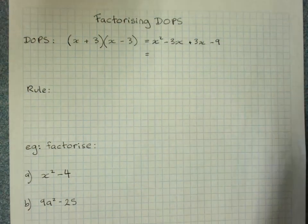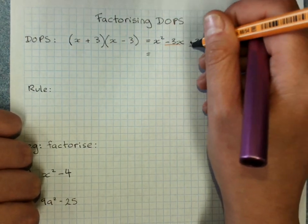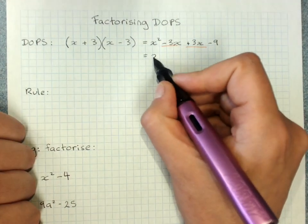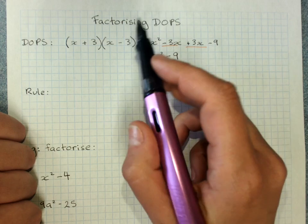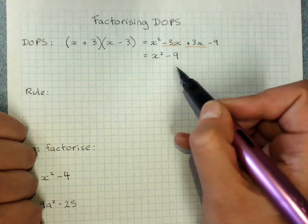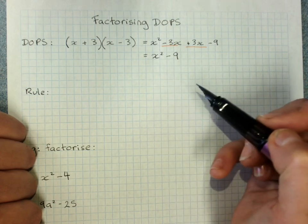You'll see that when we gather our like terms, negative 3x plus 3x will just cancel out. And so I'll be left with x squared minus 9. Minus is of course a difference. And x squared and 9, 3 squared, are perfect squares. So this is a difference of perfect squares.